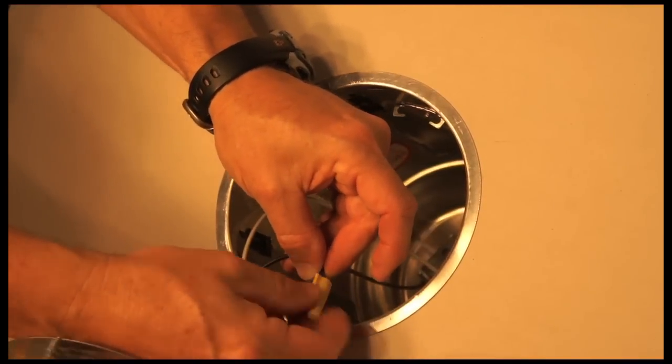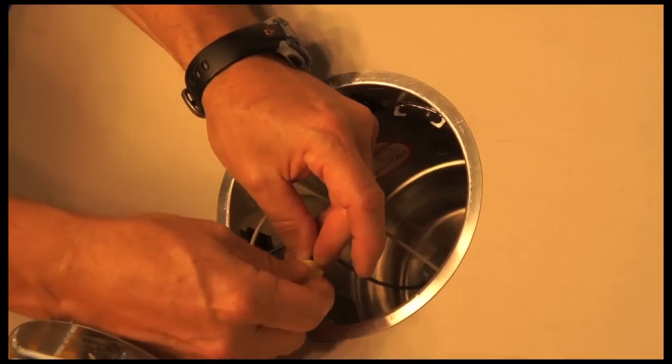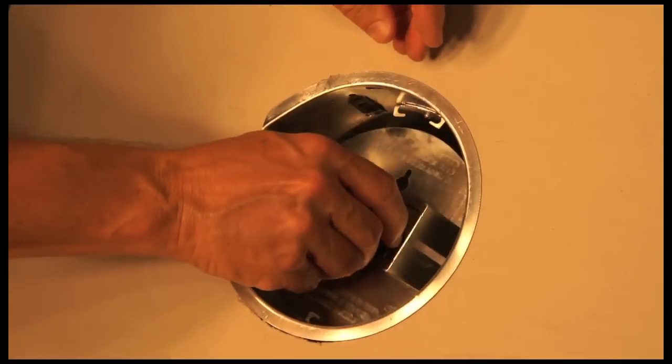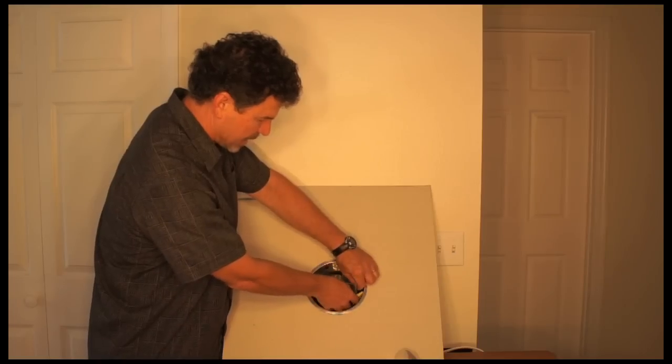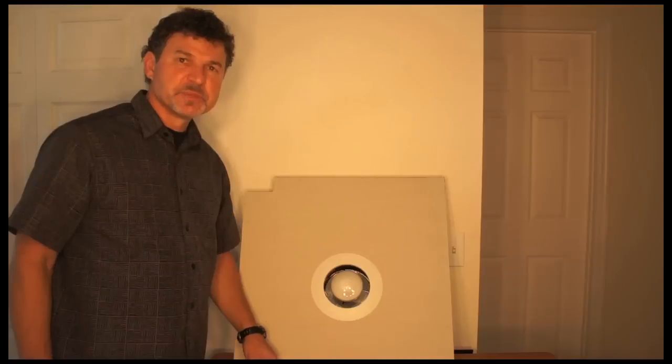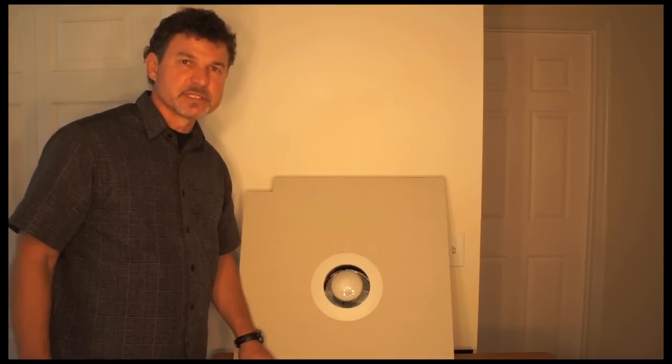And simply replace the socket into its location. This has been Ron Duncan with House to Home, and that's how you fix a recessed light.